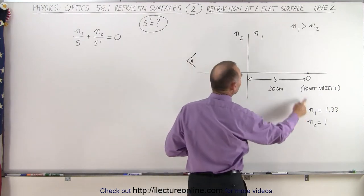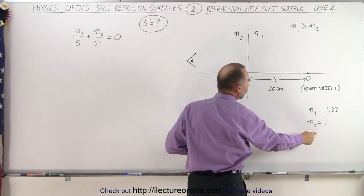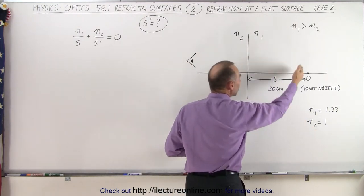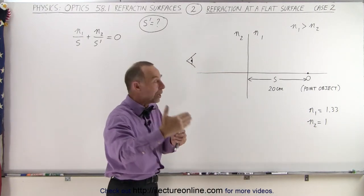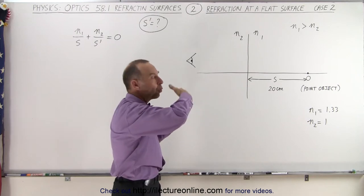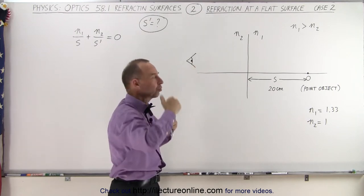Notice that N1 is equal to 1.33 and N2 is equal to 1, which means where the object is at, that's where the index of refraction is the highest, so when the ray goes across the boundary, it will bend away from the normal rather than towards the normal.